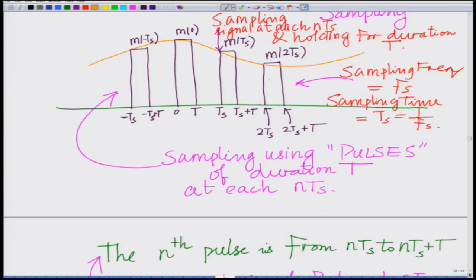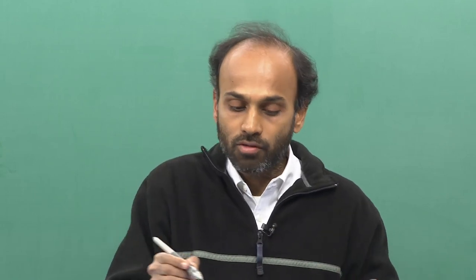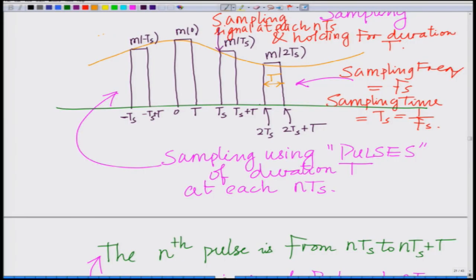This pulse duration T should be much smaller than the sampling interval Ts. The pulse is confined to a relatively small portion of the sampling interval and the smaller the duration of the pulse, the more precise your sampling is. The pulse is simply spreading — it is a sample and hold operation, spreading the value of the signal over the duration T. This is also known as pulse amplitude modulation.